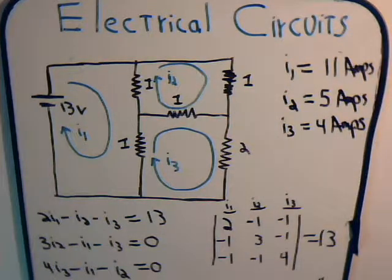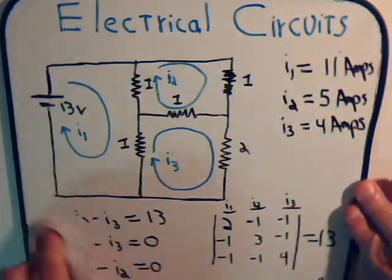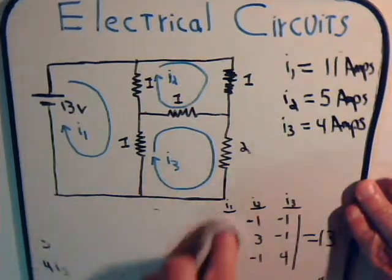So finally we have determined the currents, or the mesh currents we should say: I1, I2, and I3. And no negative signs came up, so the directions that we assumed turn out to be correct after all.